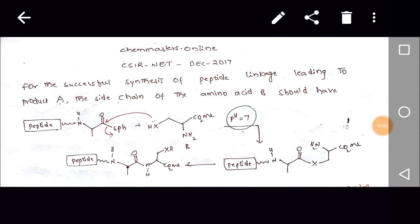Hi, welcome to chemassist.online. We do research for your success. This question is given in CSIR NET December 2017. The question is for the successful synthesis of peptide linkage leading to product A, the side chain of the amino acid B should have...